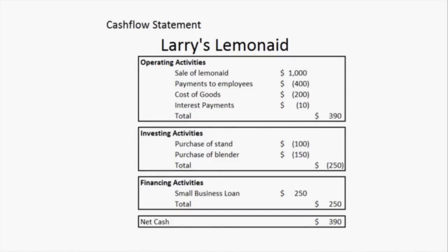Here we are looking at the cash flow statement for Larry's Lemonade. Cash flow statements are always period-based. While we don't have a period on here, we're going to assume this may be an annual statement. It could also be quarterly or even monthly, depending on what kind of statement you're looking at. Cash flow statements help you understand what a company is spending money on and how and where it is making money. Cash flow statements are always divided into three sections: operating activities, investing activities, and financing activities.